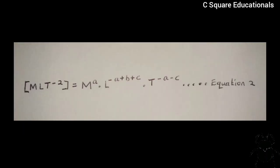Simplifying this, we get [MLT^-2] is equivalent to M^A L^(-A+B+C) T^(-A-C). Let us call this our equation 2.